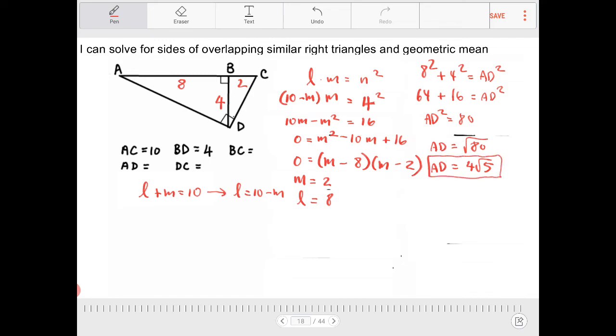And then similarly, I can solve for what DC is. So if I have DC, so I can have 2 squared plus 4 squared is equal to DC squared. So I'm going to have 4 plus 16 is equal to DC squared. DC squared is equal to 20. Or in other words, DC is equal to 2 square root of 5.